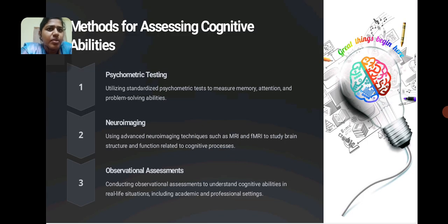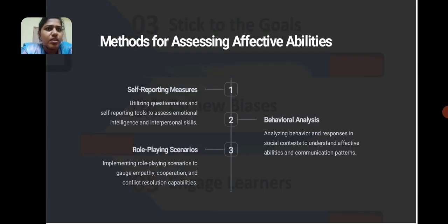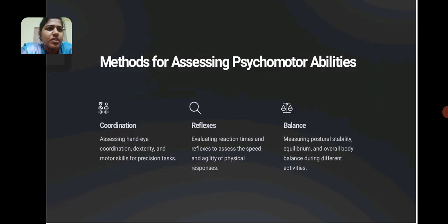Methods for assessing cognitive abilities: Psychometric testing, Neuroimaging, Observational assessments. Methods for assessing affective abilities: Self-reporting measures, Role-play scenarios, Behavioral analysis. Methods for assessing psychomotor abilities: Coordination, Reflexes — evaluating reaction time and reflexes to assess the speed and agility of physical responses, and Balance.